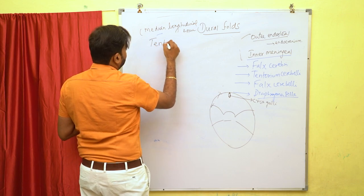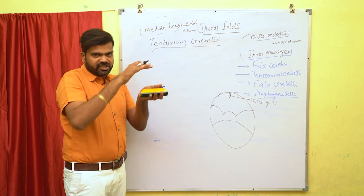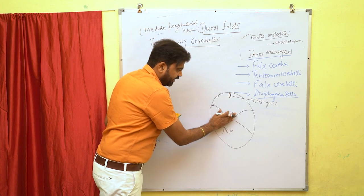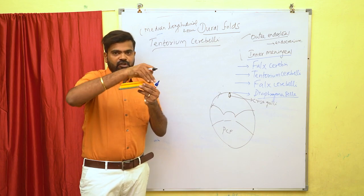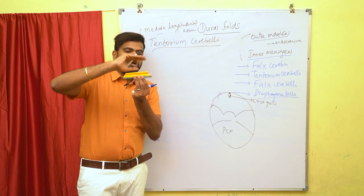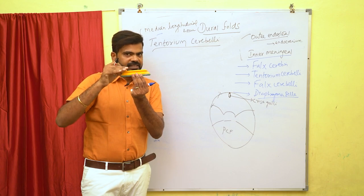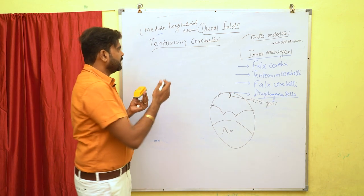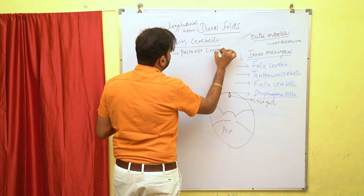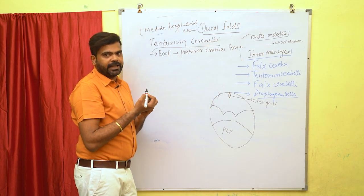Next we move on to the tentorium cerebelli. The tentorium cerebelli is tent-shaped and forms the roof for the posterior cranial fossa. It separates the occipital lobe of the cerebrum from the cerebellum. Above the tentorium cerebelli we see the cerebrum, and below it we see the cerebellum.